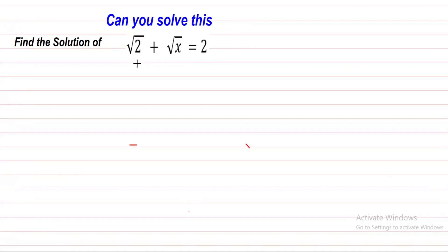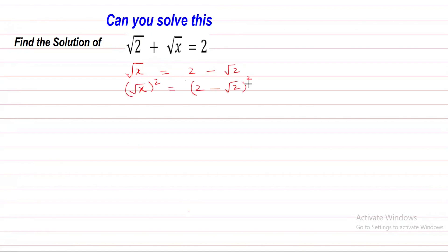We can write this equation as K root X equal to 2 minus K root 2. To solve this equation, we will take the square on both sides. After squaring both sides, the square root is cancelled and we get X on the left. We simplify 2 minus K root 2 whole square using an algebraic identity.